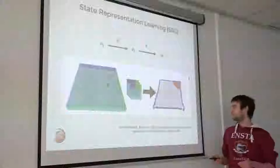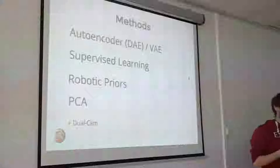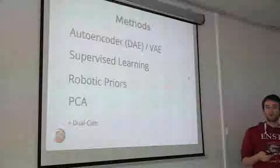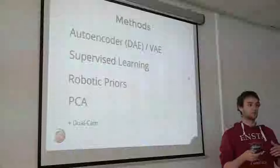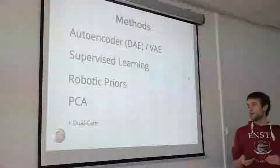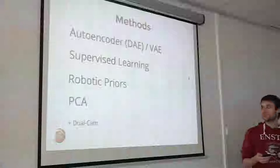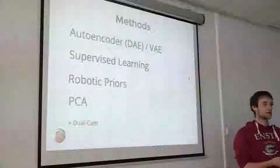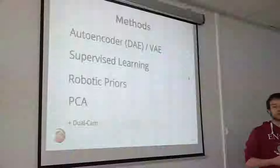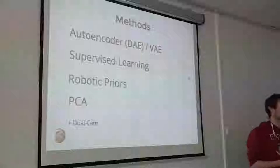We are currently comparing different methods: denoising autoencoder, variational autoencoder, supervised learning using ground truth as target — I will explain what we call ground truth in our case — PCA, and we are focusing on robotic priors. As a recap from yesterday, when you learn a representation using robotic priors, you give some prior knowledge about the world to your robot — for instance, that states will only evolve gradually. We are also experimenting with learning states using multiple cameras, which is more René's work.